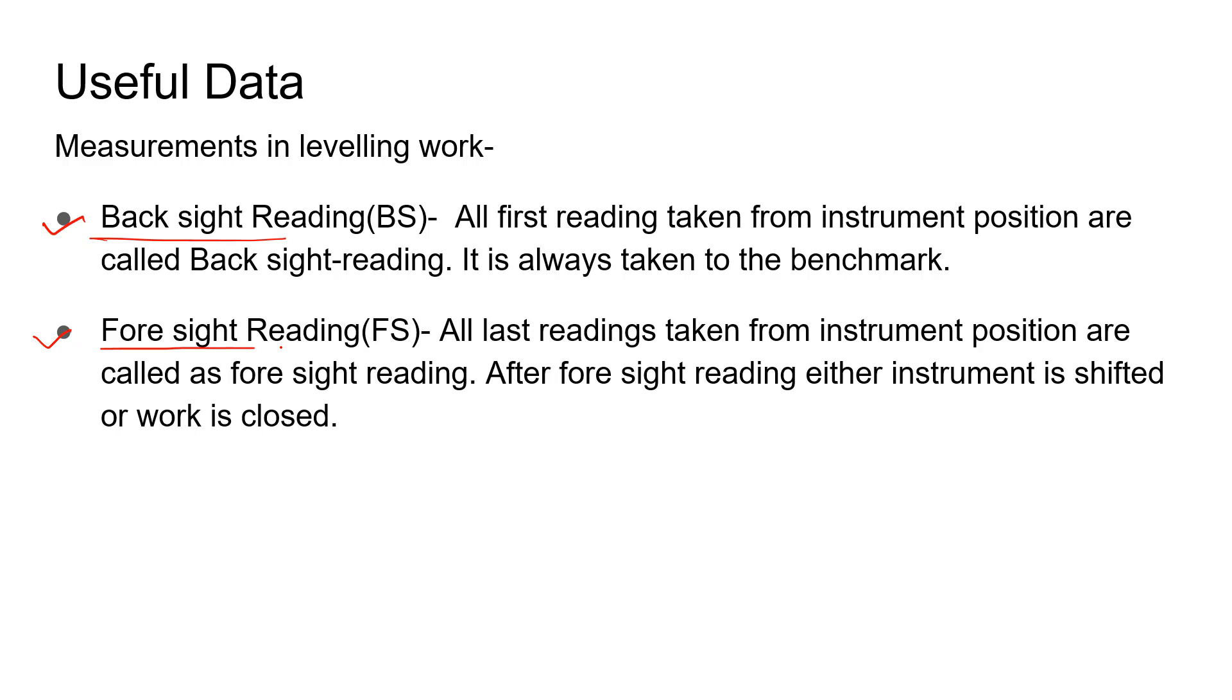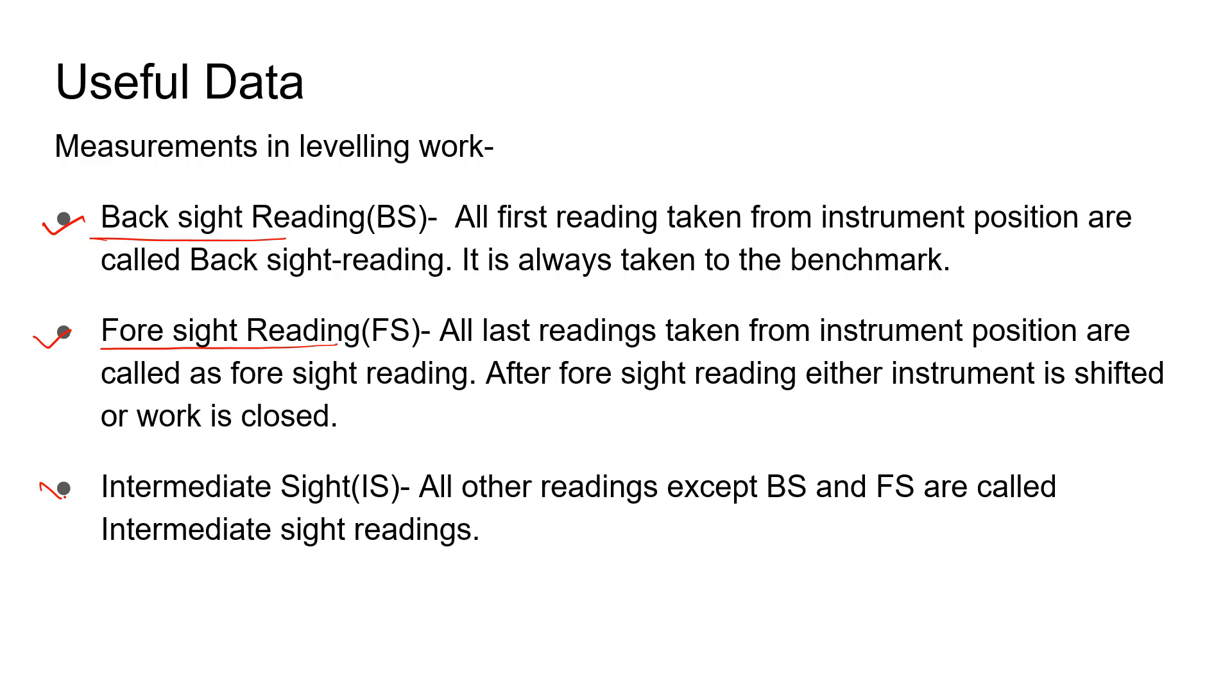The second reading is termed as foresight reading, and the third reading is termed as intermediate sight reading. We can easily understand this with a simple figure. If we have a particular area with different levels in it,